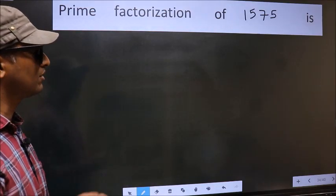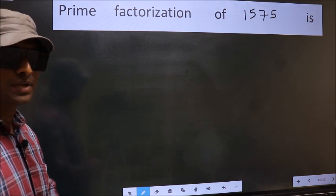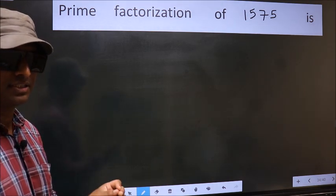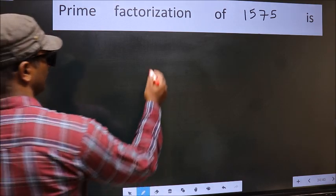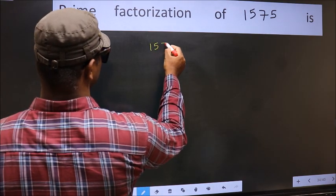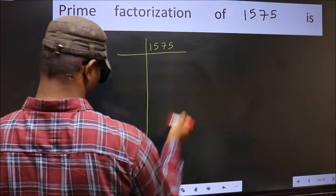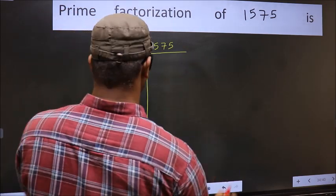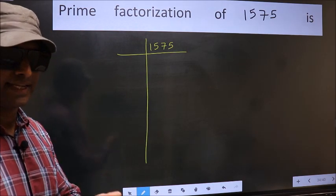Prime factorization of 1575. To do prime factorization, first we should frame it in this way. 1575. This is your step 1. Next.